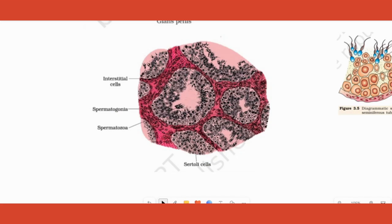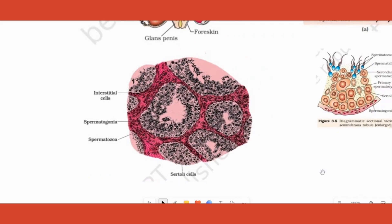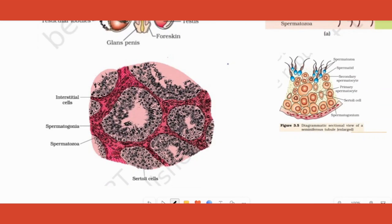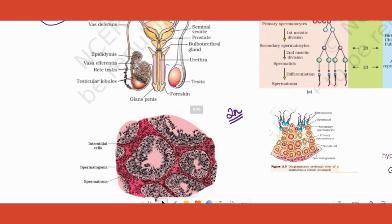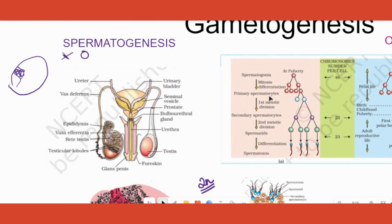What happens to the spermatogonia? They are plain cells which are similar to our body cells. Since they are similar to body cells, the ploidy — that is, the number of chromosomes — will be 2n. Now, all of them are not special; only a few of them are special. The ones that are special are called primary spermatocytes, and they go on to divide in a different manner from the previous divisions — they undergo meiotic division.